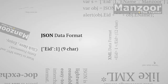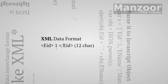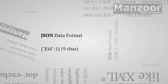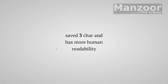Now, if I want to display the same thing using JSON data format, I simply write a curly open bracket, then in double quotation the field name 'employeeID', a colon, and its value. If you count, those are nine characters. Compared to XML's 12 characters, JSON conveys the same data in nine characters and also has more human readability.